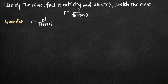The first thing we need to do is get this polar equation into standard form. Getting it into standard form will help us identify eccentricity and the equation of the directrix. Once we know the eccentricity, that will allow us to identify the type of conic section we're dealing with — whether it's a parabola, an ellipse, or a hyperbola.